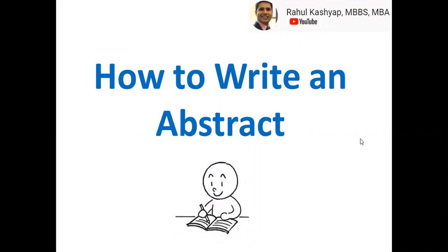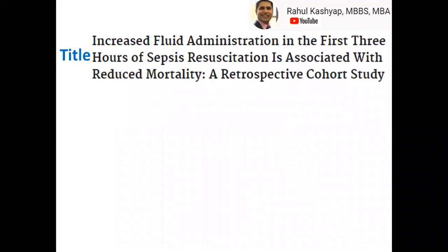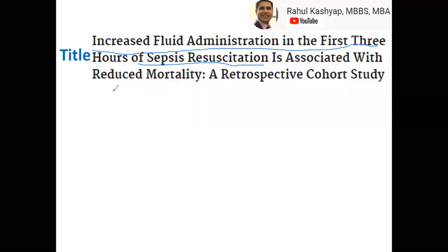First thing first: each abstract has a title. You have to have an informative title. I've taken an example from one of my previous papers. The title should be informative and should contain what exactly you studied, in what population you studied it, what was your outcome factor, and if you can give a hint about what type of study it was.